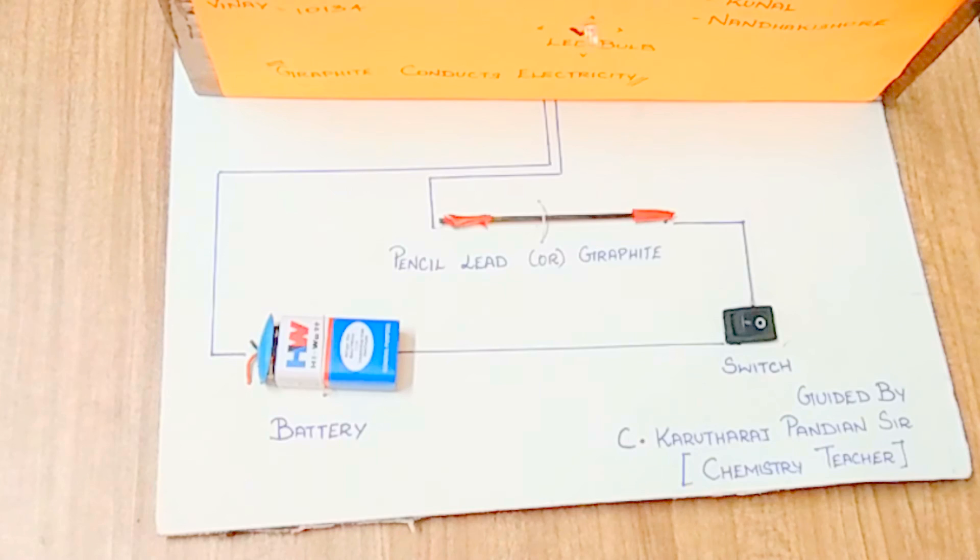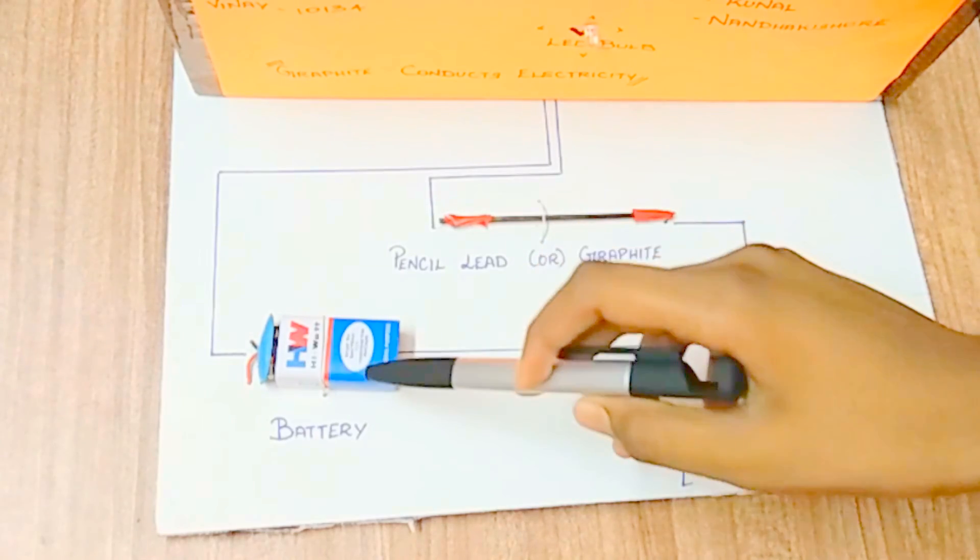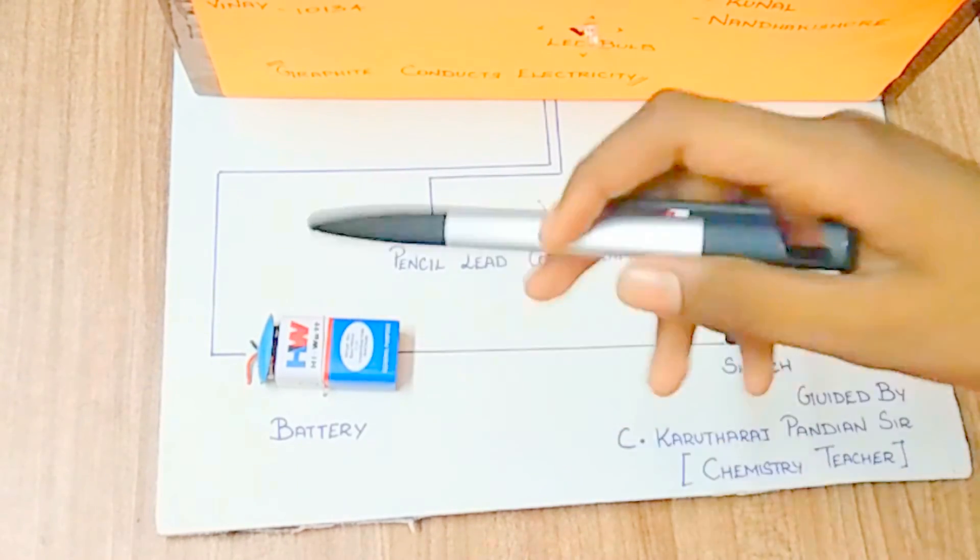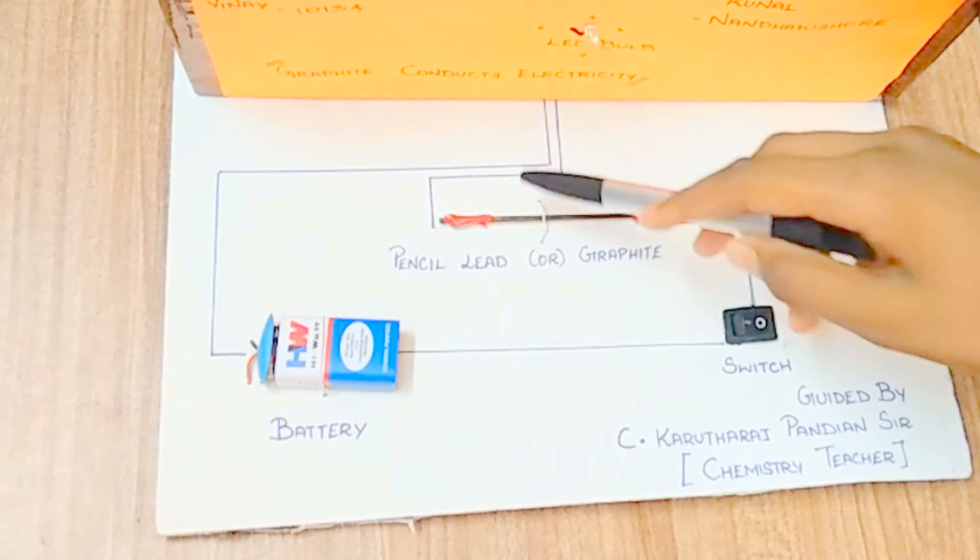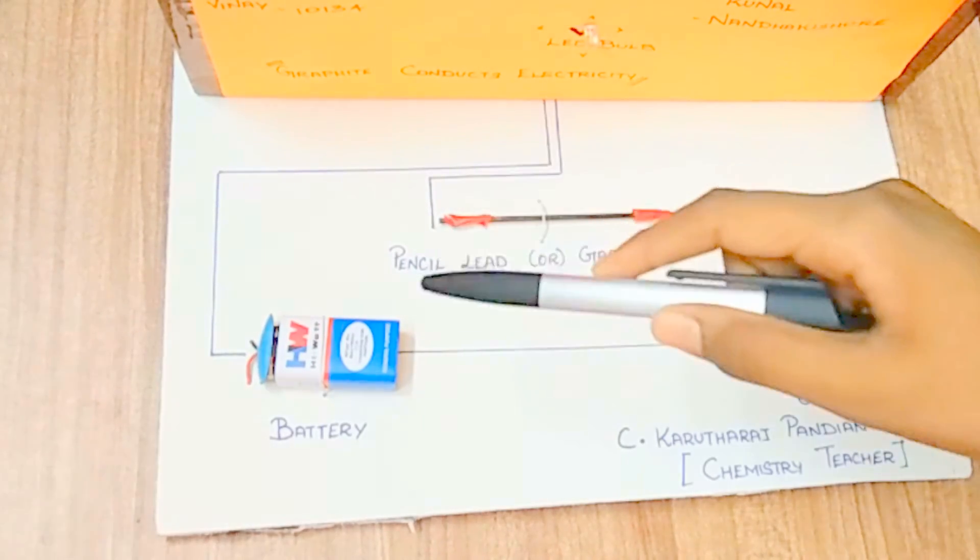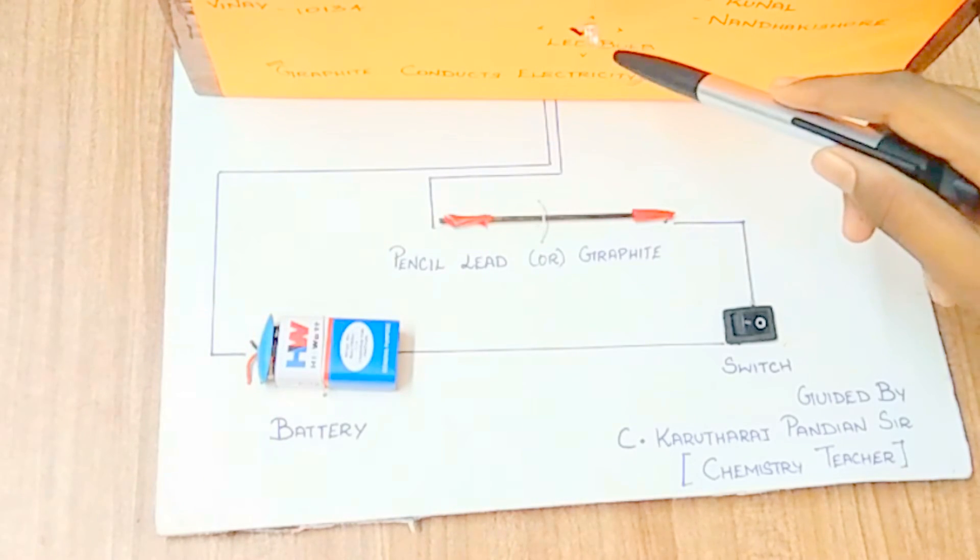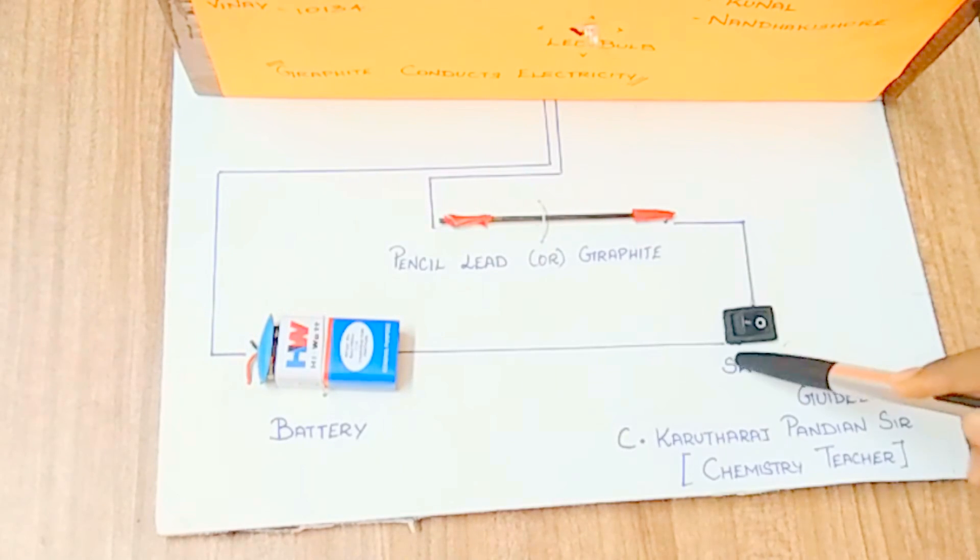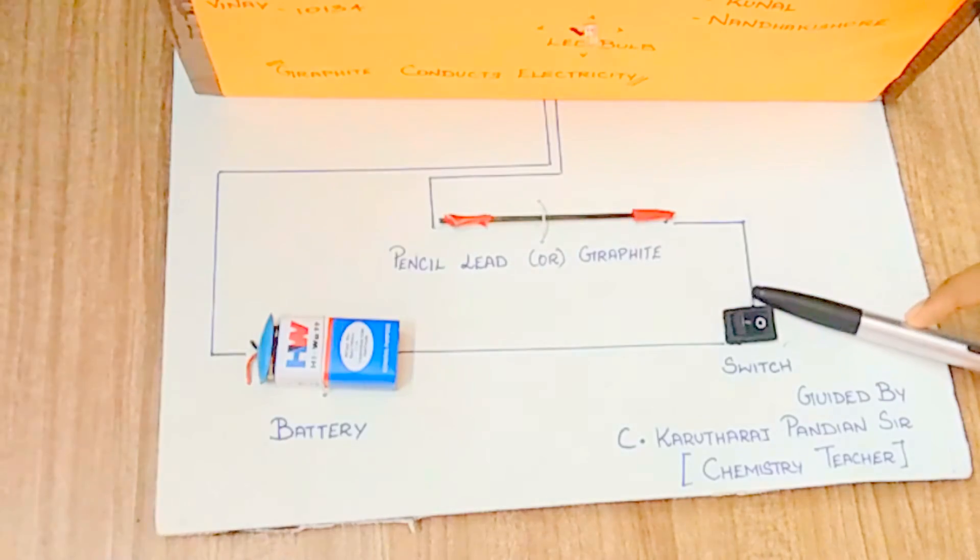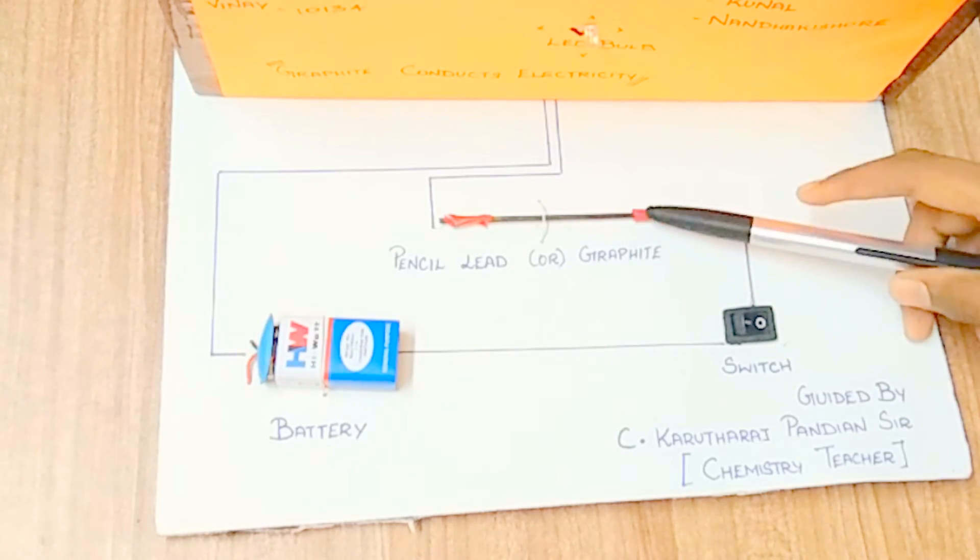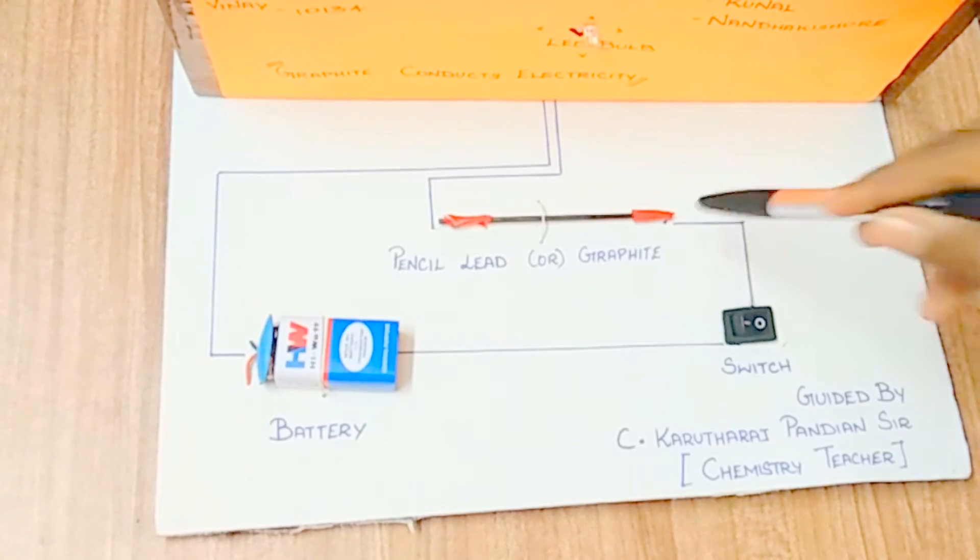So now I will be explaining about the working. The battery is the main component for a circuit and it is 9 volts. Now I have connected one wire to one node of the LED and another to a switch. The switch is connected through the graphite to the LED, completing the circuit.